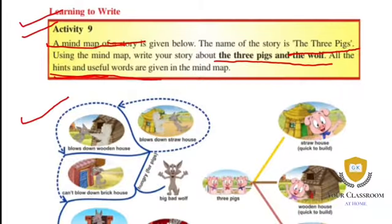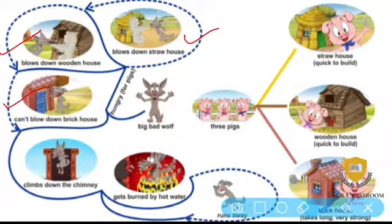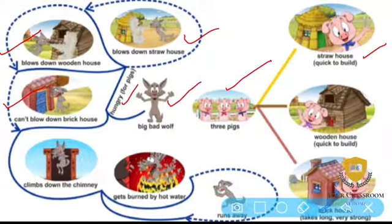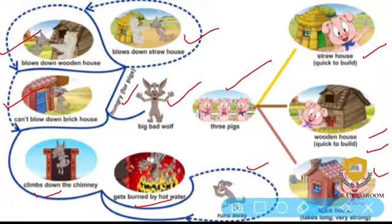Let's look at the mind map. First picture: blows down wooden house. Next: blows down straw house, can't blow down brick house. Hungry for pigs — Big Bad Wolf. Three Pigs: straw house — quick to build; wooden house — quick to build; climbs down the chimney, gets burned by hot water, runs away. Brick house takes long to build but is very strong.